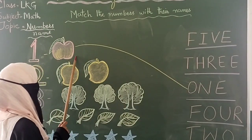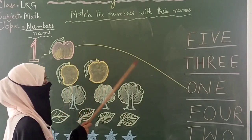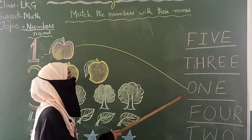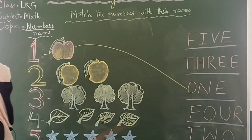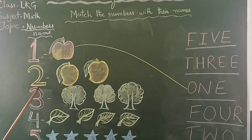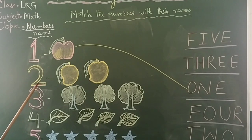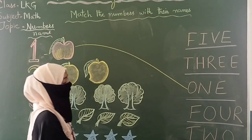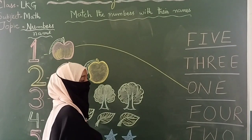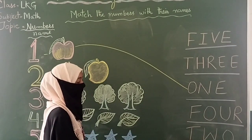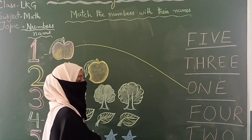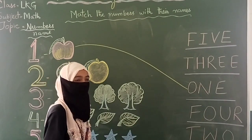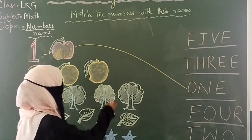The second one is two. What is the spelling of two? T-W-O, two. T-W-O, two. Now we have to match this with its name.